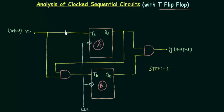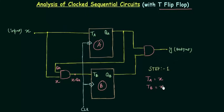That's actually very simple. TA is just the input X. Similarly, for TB it is the output of this AND gate, and the two inputs to this AND gate are QA and X. So the output of this AND gate is X AND QA, and that is the value of TB. Now we will move to the output equation. The output Y is the output of this AND gate, and the inputs are QA and QB, so Y is equal to QA AND QB.